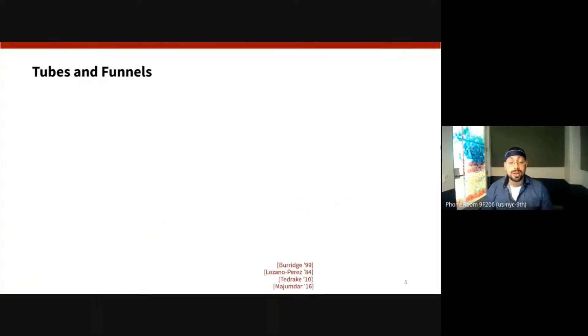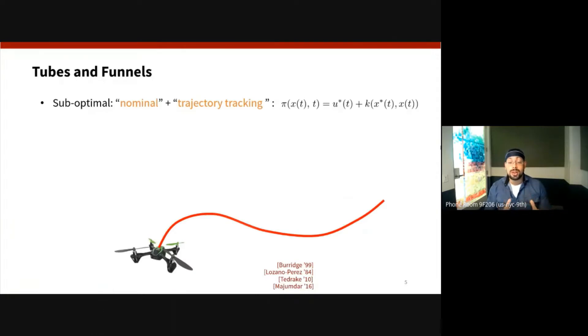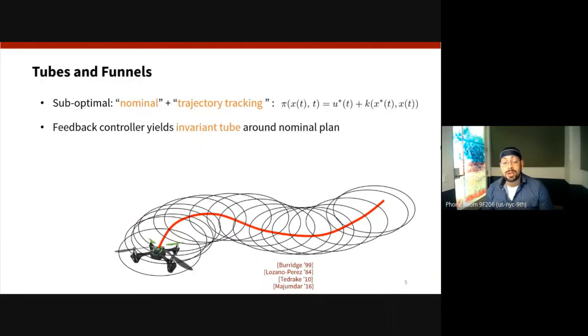So to relax the general closed-loop policy form, the typical solution approach is to decompose the policy into two parts. The first part, the nominal part is u*(t). This is computed by assuming unperturbed dynamics. And then this is augmented with a feedback tracking controller K, which tries to maintain your state close to your desired motion plan.